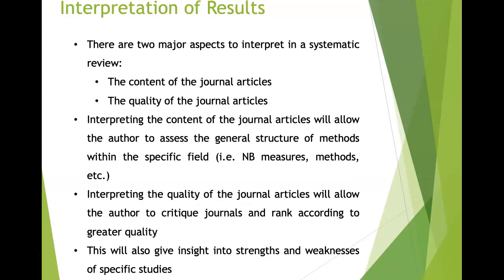The interpretation of results is the discussion section, same as in empirical research. There are two major aspects to interpret in a systematic review: the content of the journal articles and the quality. Interpreting the content allows the author to assess the general structure of methods within the field. The quality of journal articles allows the author to critique and rank them, giving insights into strengths and weaknesses and helping to design a stronger study.